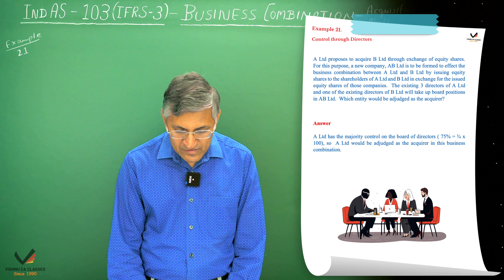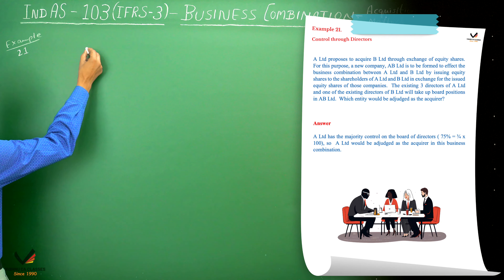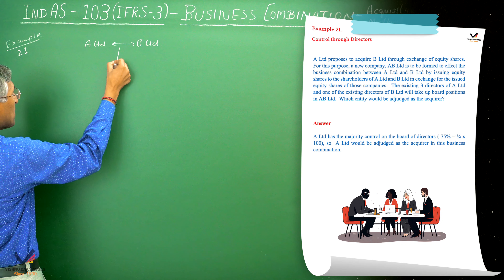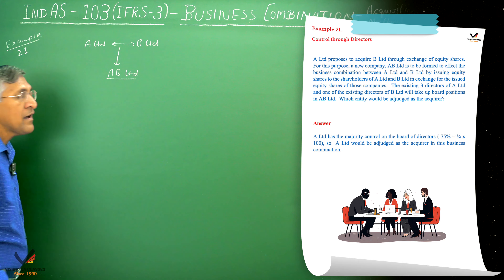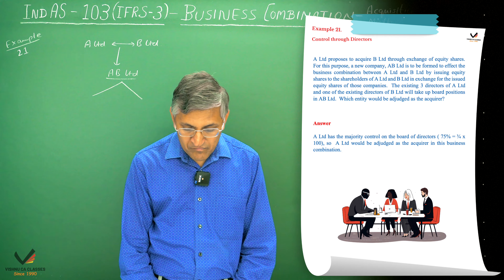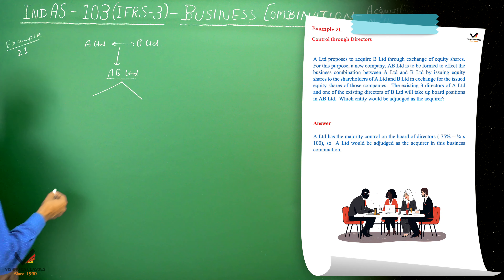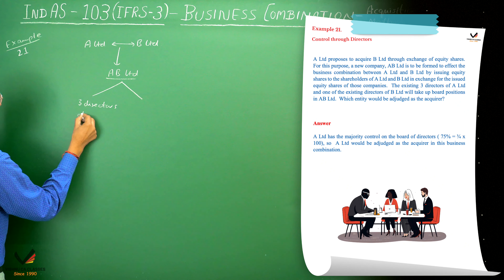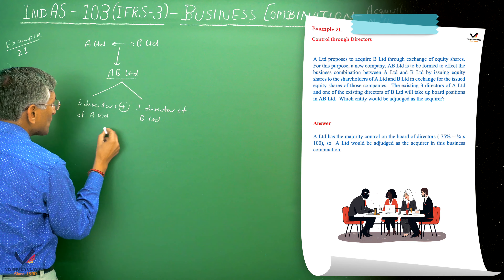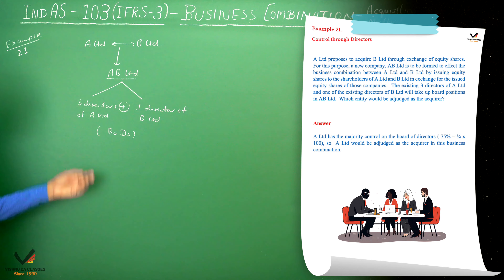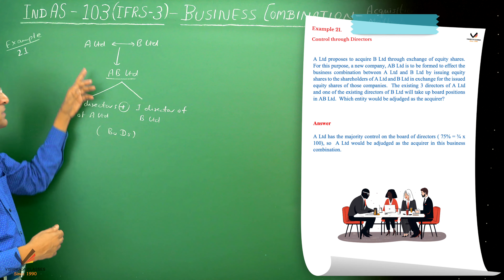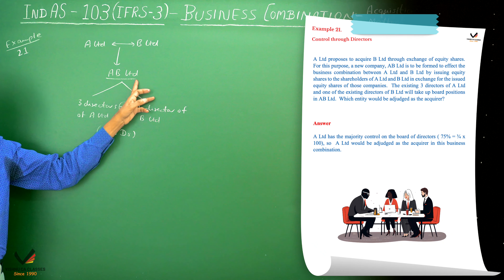Which entity will be identified as the acquirer? There are two companies: A Limited and B Limited. They merge together and form a new company, AB Limited. In this company, three directors of A Limited and one director of B Limited will constitute the board of directors of AB Limited. AB Limited will issue equity shares to A Limited and B Limited, but it is not given what percent of shares will be received by A Limited or B Limited. So we have to identify who is the acquirer of AB Limited.